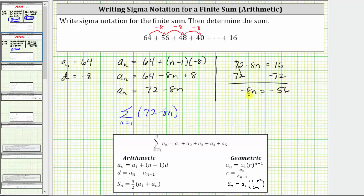Last step to solve for n is divide both sides by negative 8. Simplifying, we have n equals negative 56 divided by negative 8 is equal to positive 7.